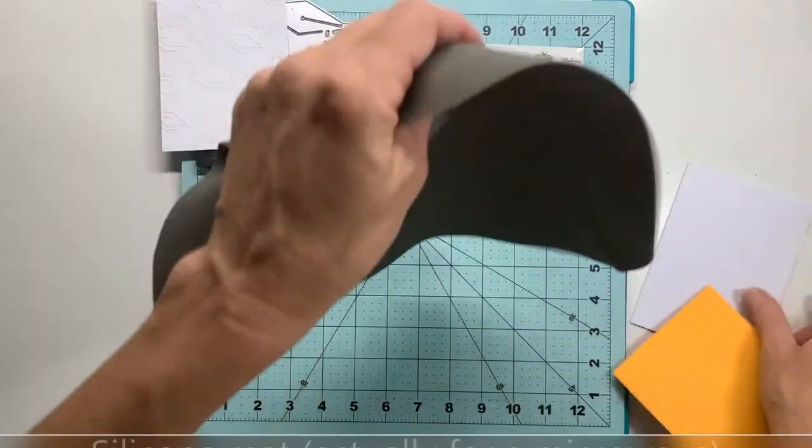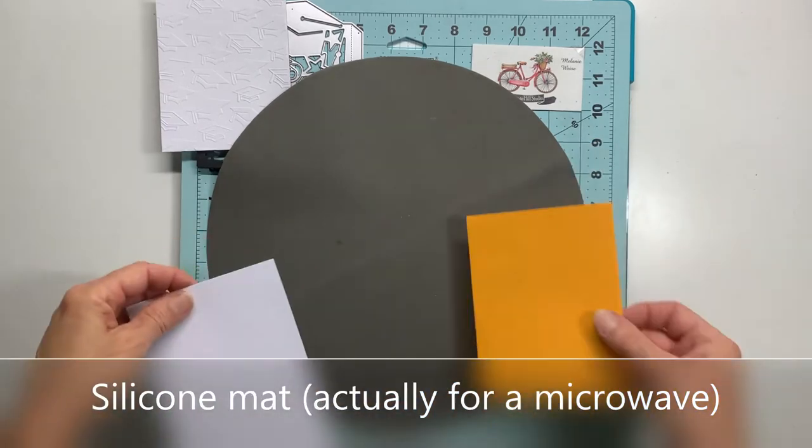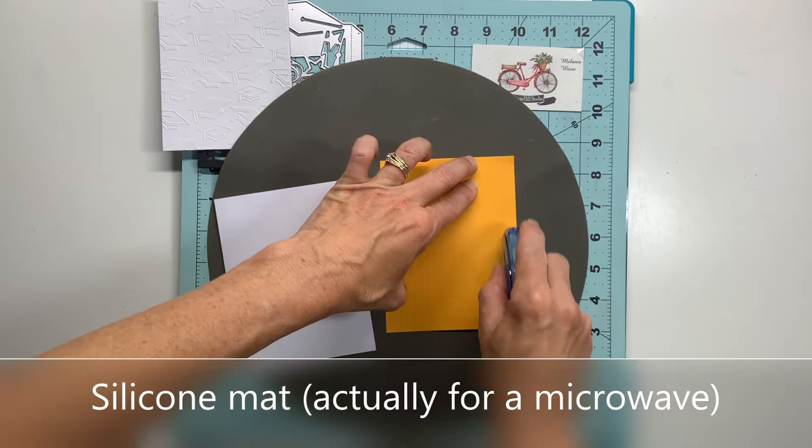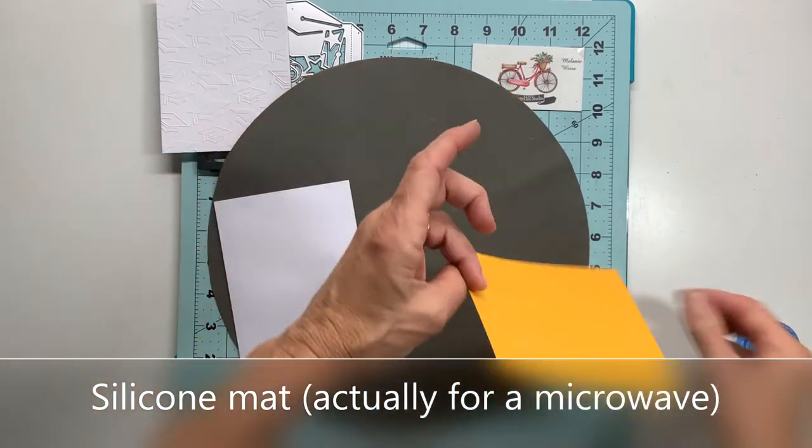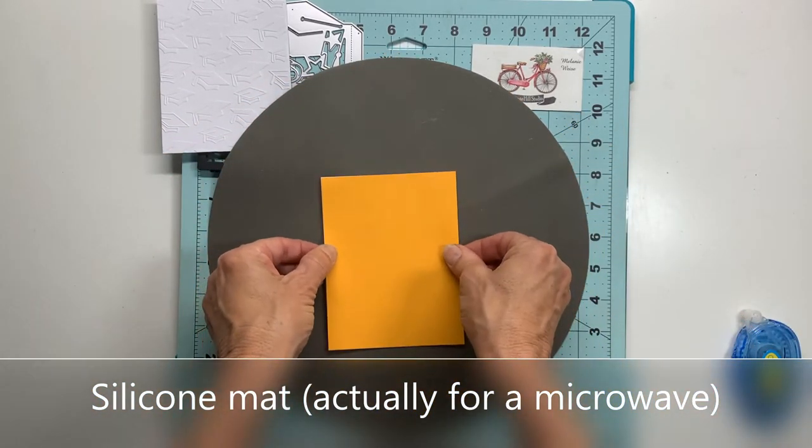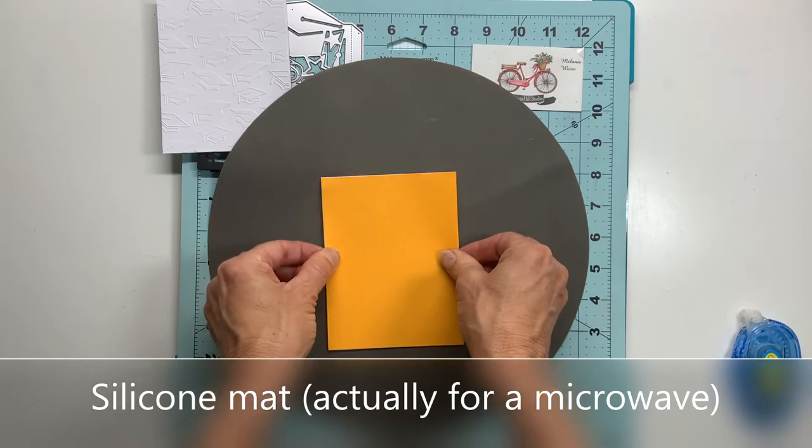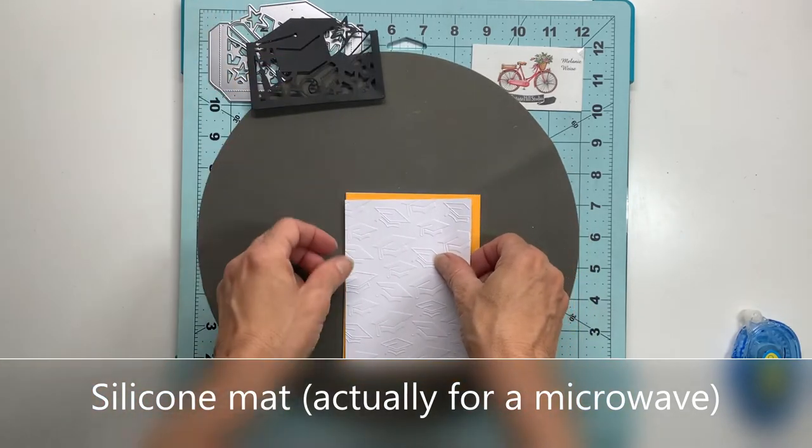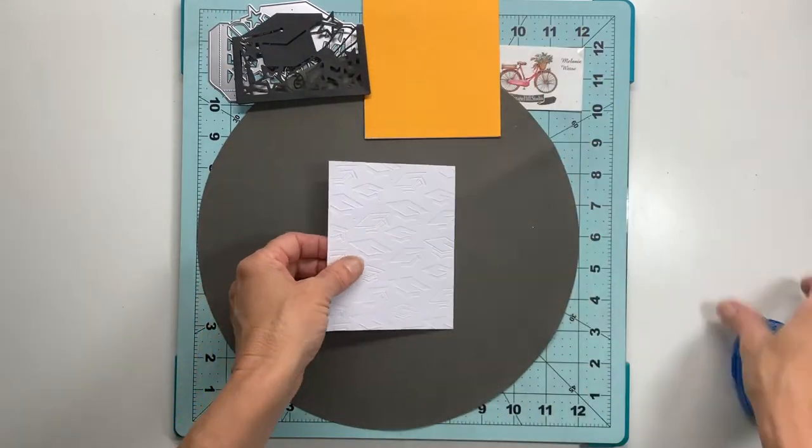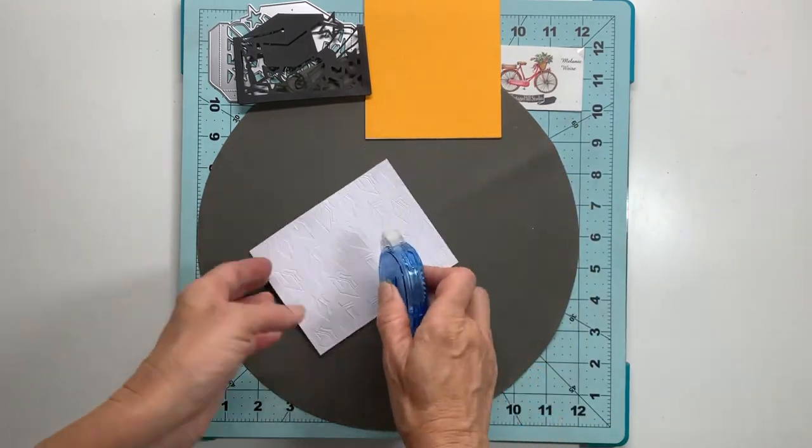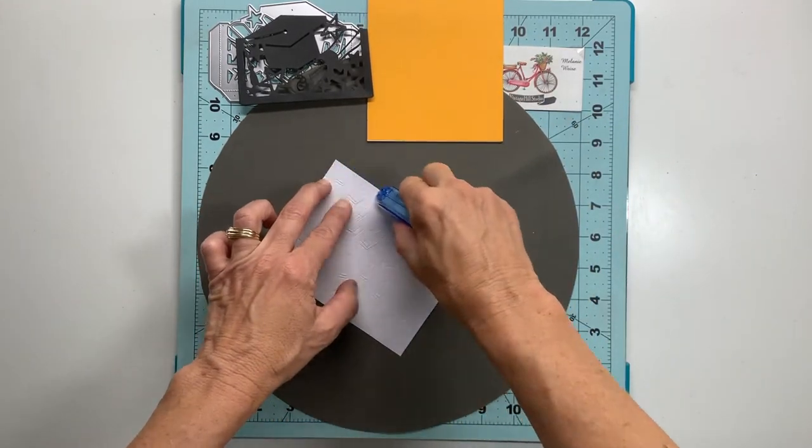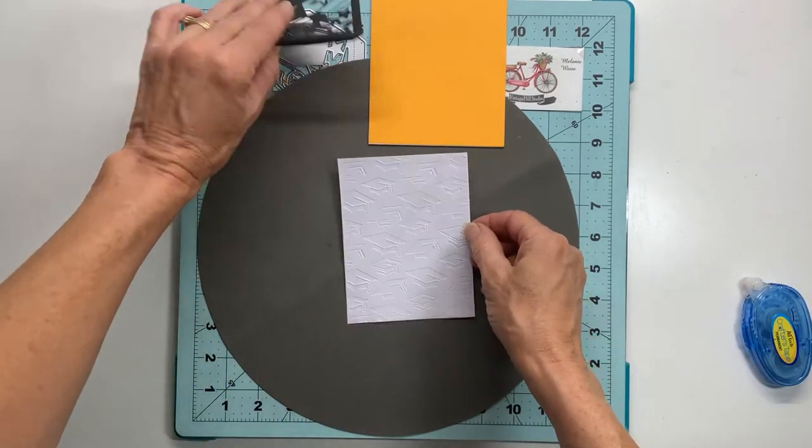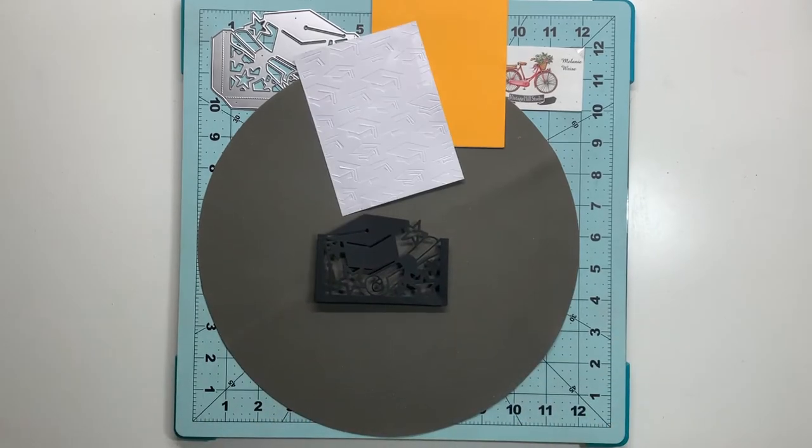Now I'm bringing over my handy dandy silicone mat that was actually meant for a microwave, but it works great for any adhesives, whether using this tape runner, liquid adhesives, or even hot glue. I can get right up to the edge, and if I get any on that silicone mat I just simply take my finger and roll the adhesive off. As you can see, it makes for a nice work surface because when I do go over the edge, my cardstock doesn't even stick to the silicone mat.